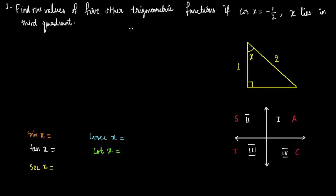Find the values of five other trigonometric functions if cos x is equal to minus half, x lies in the third quadrant. Before doing anything, let's get our triangle up.